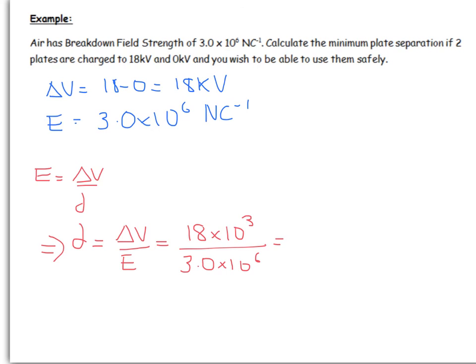Which is going to be 18 times 10 to the 3 over 3.0 times 10 to the 6. If you stick those numbers in, it comes out as 6.0 times 10 to the minus 3 meters or 6.0 millimeters. Looking at the numbers, we've got two sig figs, so that would be an appropriate number to give your answer to in this case.